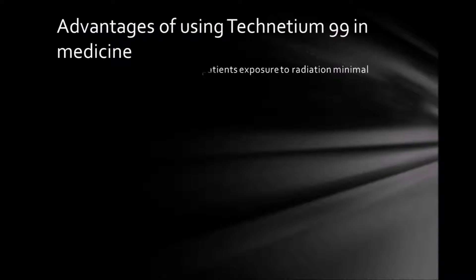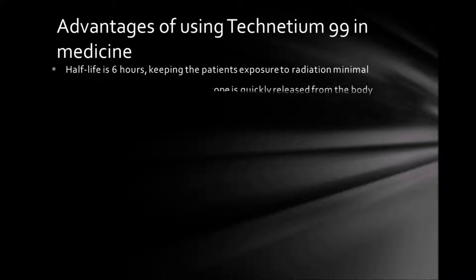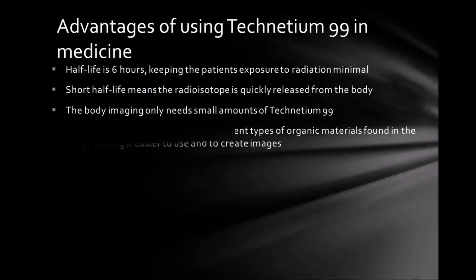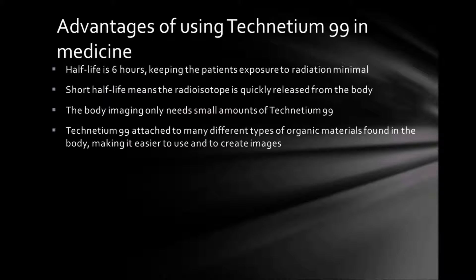There are many advantages for using Technetium-99, making it one of the most commonly used radioisotopes in medicine. The half-life of Technetium-99 is short — 6 hours — keeping the patient's exposure to radiation minimal. The short half-life also means that the radioisotope is quickly released from the body. The body imaging only needs small amounts of Technetium-99, and it attaches to many different types of organic molecules in the body, making it easier to use and to create images.